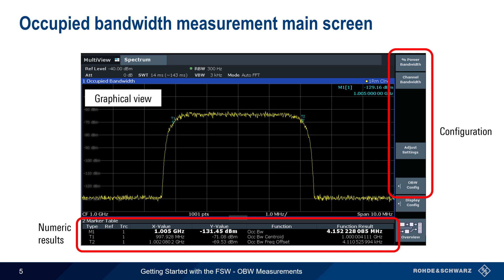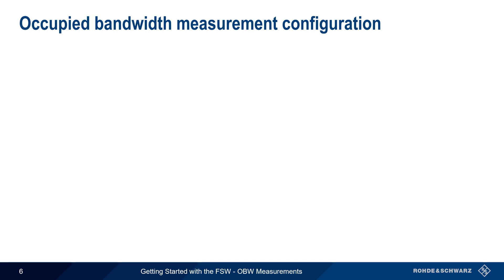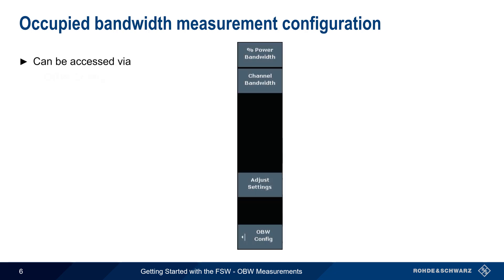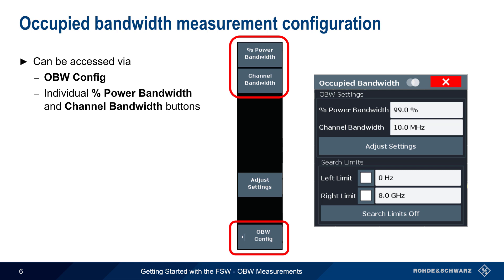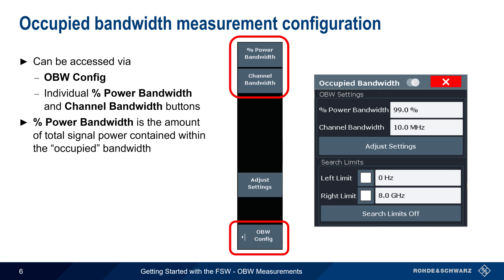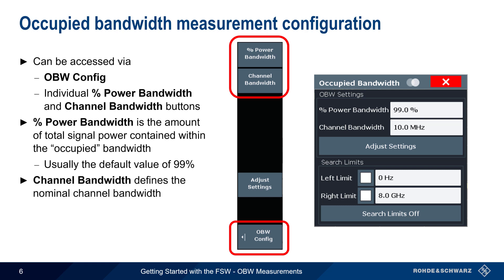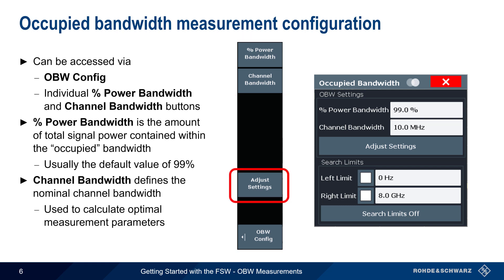Measurement configuration parameters can be accessed using either the occupied bandwidth configuration dialog, or via the individual percent power bandwidth and channel bandwidth buttons. Occupied bandwidth is the bandwidth that contains a defined percentage of the total signal power, and in most cases measurements are made using the default value of 99%. Channel bandwidth should be set to the nominal channel bandwidth, which is normally greater than the measured occupied bandwidth. Entering the nominal channel bandwidth allows the Adjust Settings function to automatically optimize measurement parameters.